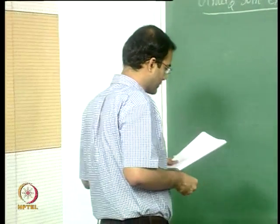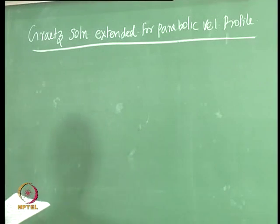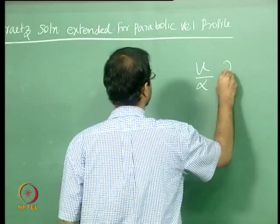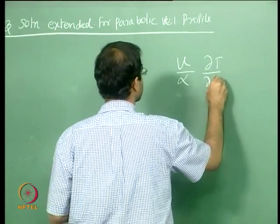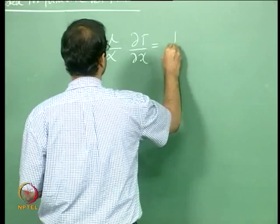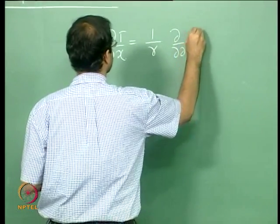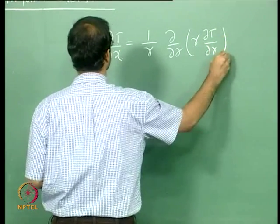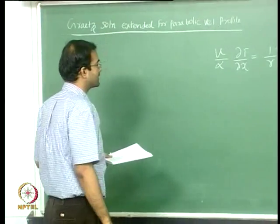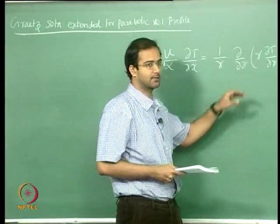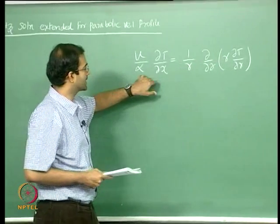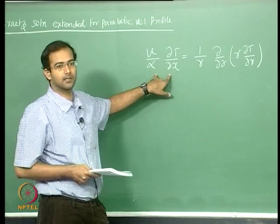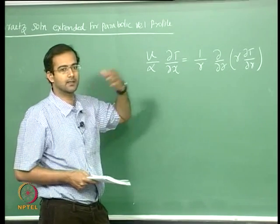The energy equation still remains the same. We write it as (1/r)(d/dr)(r dT/dr), still neglecting axial conduction with respect to radial conduction. We still have the convection term due to the axial velocity. We assume no radial velocity and no variation in the azimuthal direction.